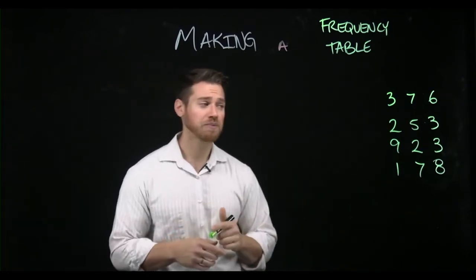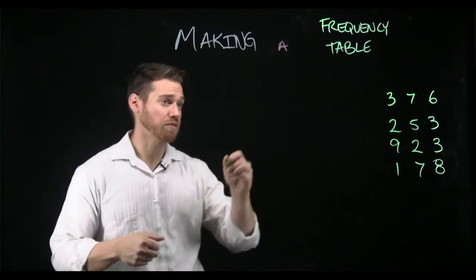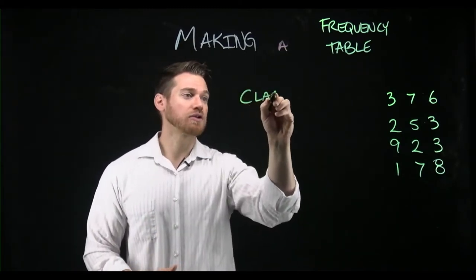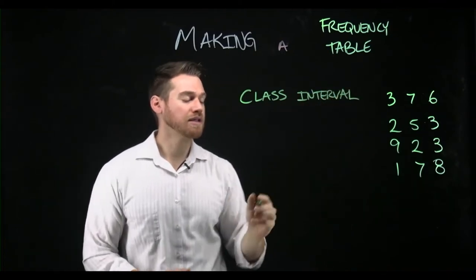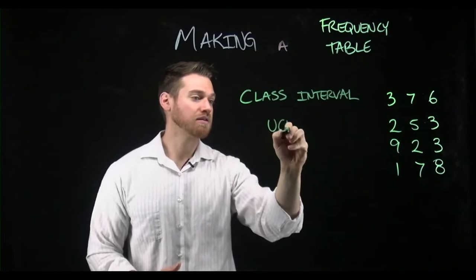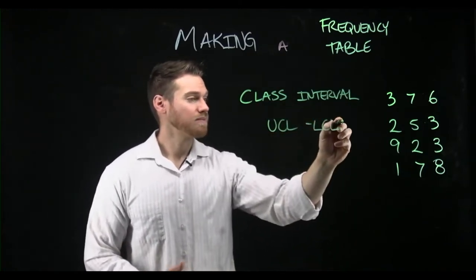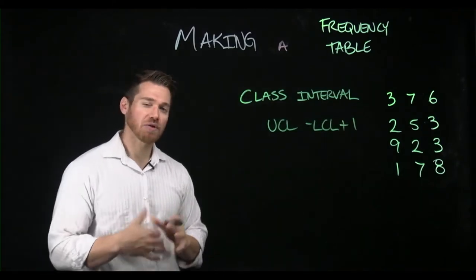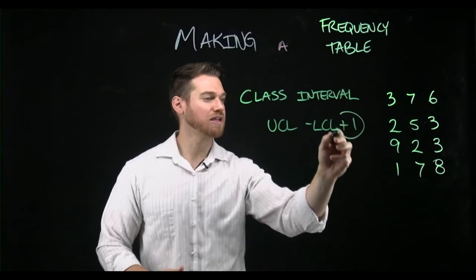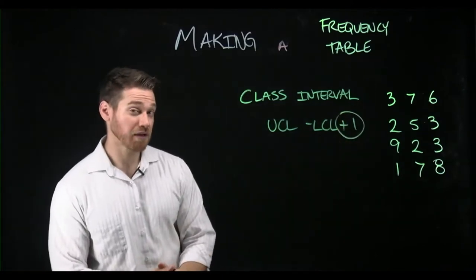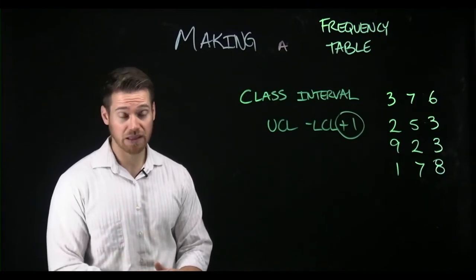The first thing we want to do is figure out how big we want a class width or class interval to be. A class interval or the class width is the upper class limit minus the lower class limit plus one. This is what we would consider the real range of the class. The reason this plus one comes in can sometimes be a bit confusing for people, but it goes to the fact that there's actually what we call real limits on continuous data.